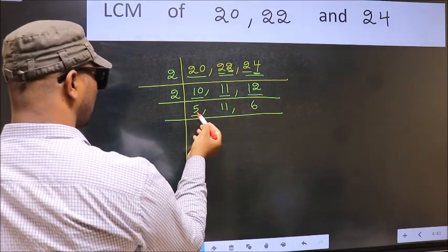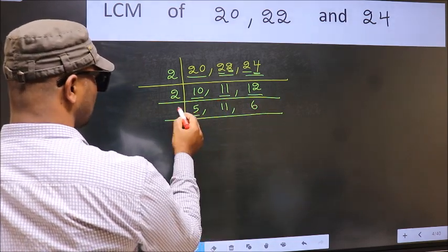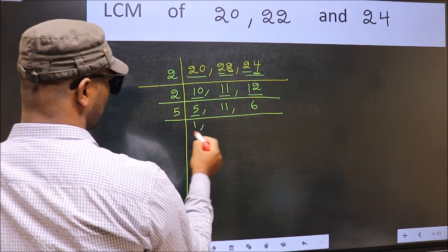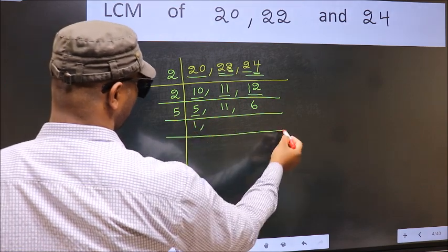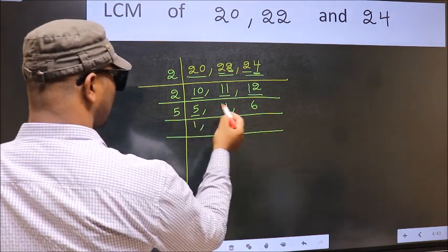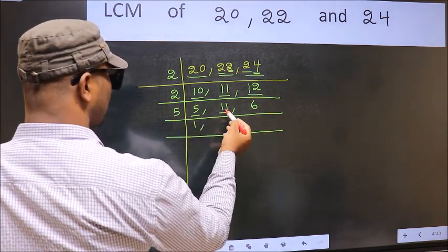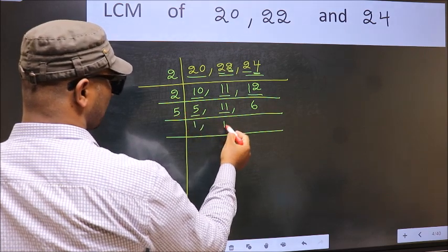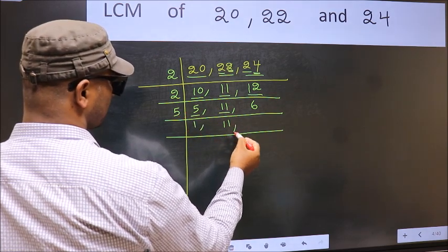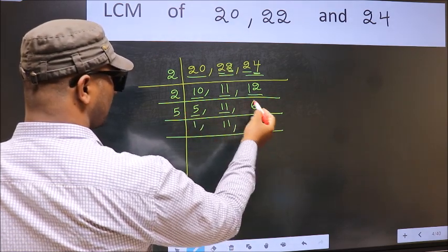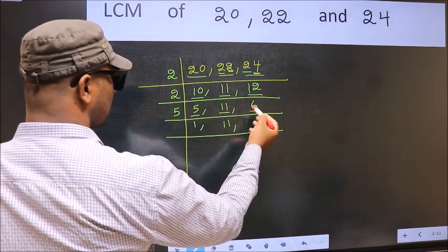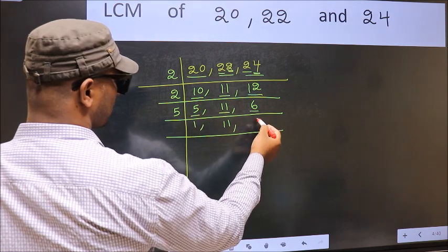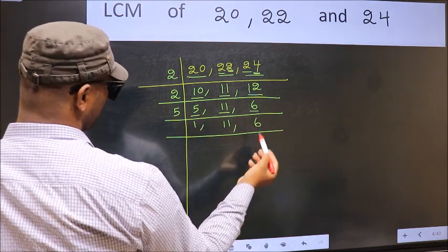Now here we have 5. 5 is a prime number, so 5 once is 5. The other number 11 — not divisible by 5, so you write it down as it is. The other number 6 — not divisible by 5, so you write it down as it is.